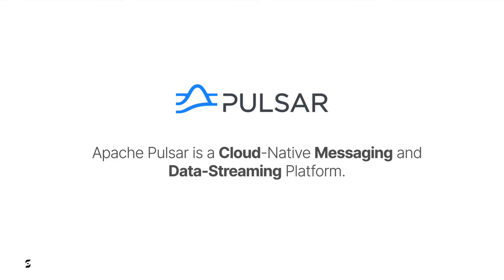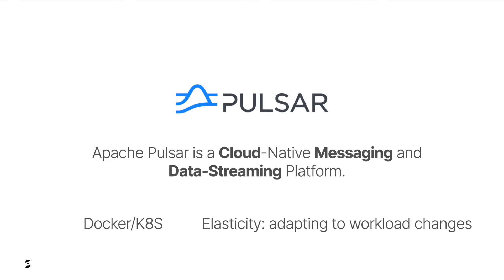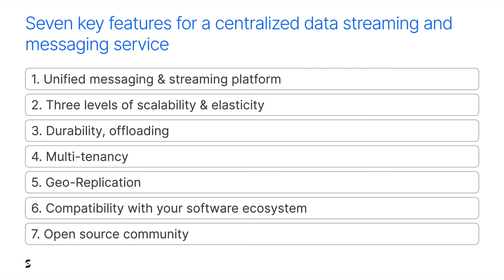So what is Pulsar in a few words? Pulsar is a cloud-native messaging and data streaming platform. Cloud-native means that Pulsar is designed for running in containerized environments with Docker or Kubernetes, and it is designed to scale out horizontally. But it is not only about scalability but also about elasticity. Unlike other data streaming platforms, Pulsar is able to quickly adapt to workload changes. In this video, I will specifically focus on seven key features that make Pulsar the ideal centralized messaging and streaming platform for your enterprise.